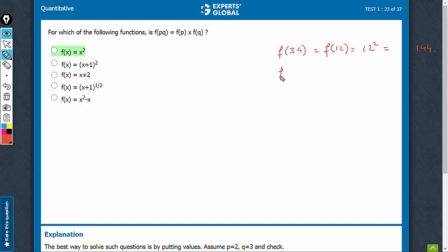And what would F of 3 times F of 4 be? This would be 3 square times 4 square, 9 times 16, still 144. The values are the same. So, this is fine.